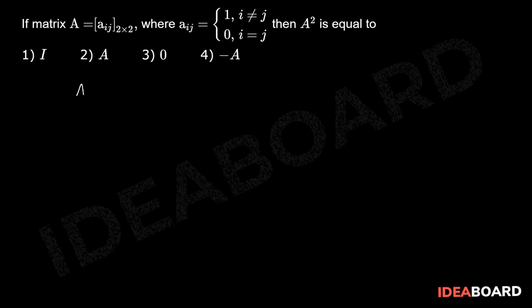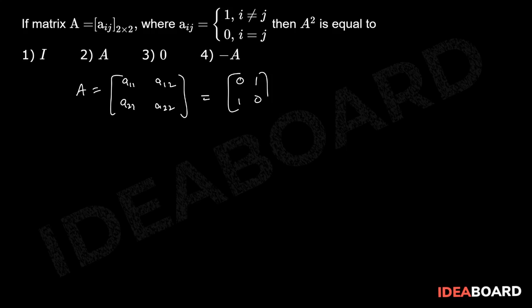Given the matrix A equal to A11, A12, A21, A22. Here, when i is not equal to j that is 1, and when i is equal to j that is 0. So A equals [[0, 1], [1, 0]].